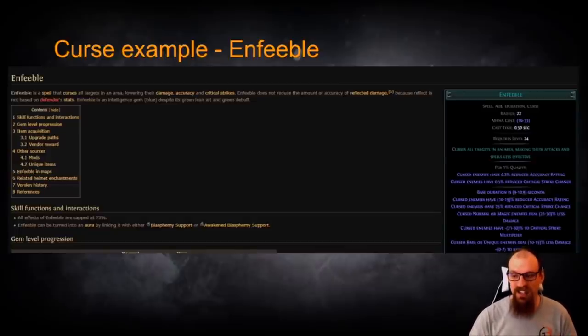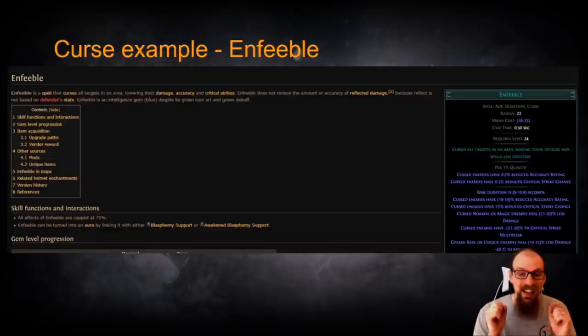Cursed Enemies have 25% reduced critical strike chance. Cursed Normal or Magic Enemies deal 21-30% less damage. Cursed Enemies have minus 21-30% to crit strike multiplier. And lastly Cursed Rare or Unique Enemies deal 10-15% less damage. Again because we are increasing the effect of all of our curses across the board Enfeeble's power levels are absolutely ridiculous whether it's applying to Rare, Unique, Magic or Normal Enemies it doesn't matter. They're simply going to hit a lot less hard because we're going to be using Enfeeble.